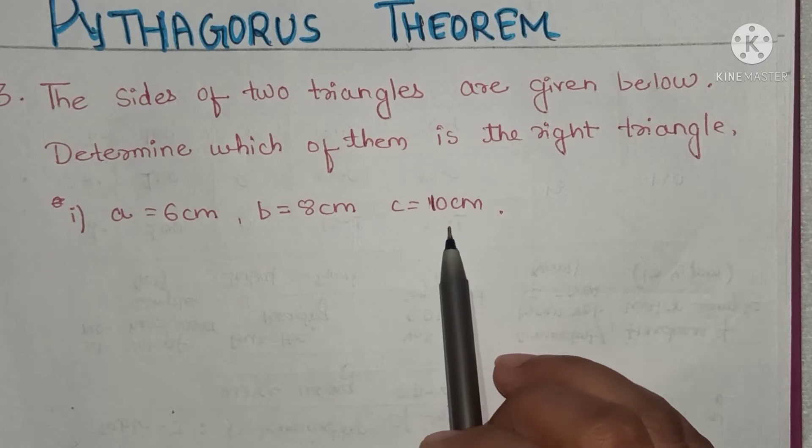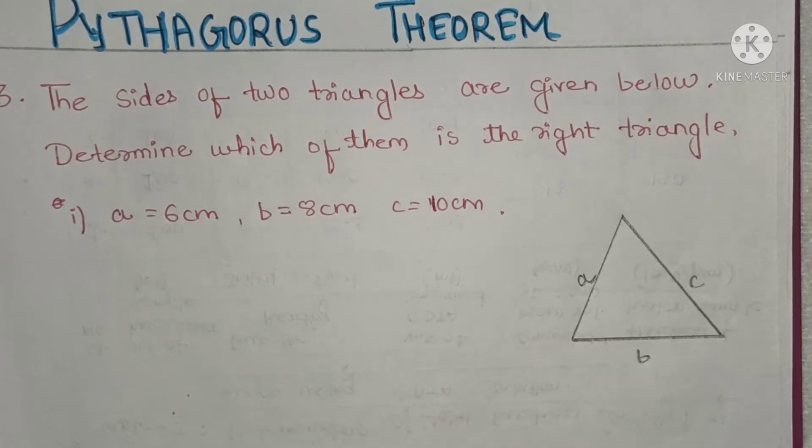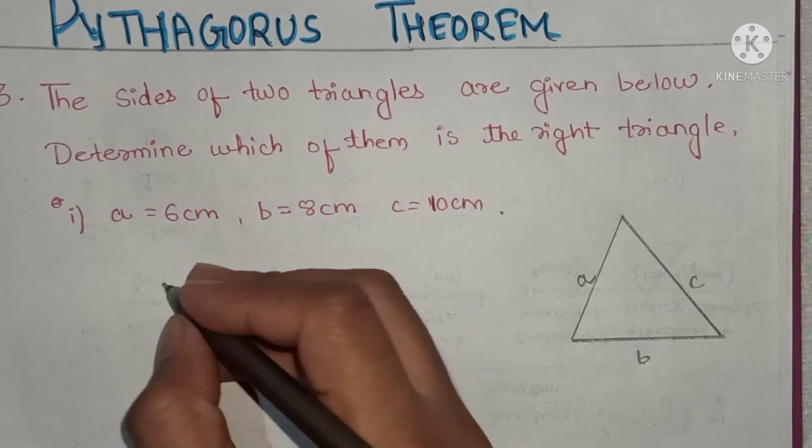I have drawn a rough diagram here with sides labeled a, b, and c using small letters. Side a is 6 centimeters, b is 8 centimeters, and c is 10 centimeters.